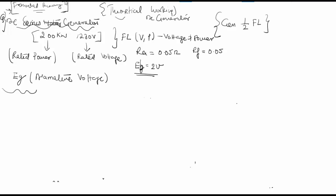The question here is for a generator having a rated power of 200 kW and a rated voltage of 230 volts, which is the terminal voltage at full load.